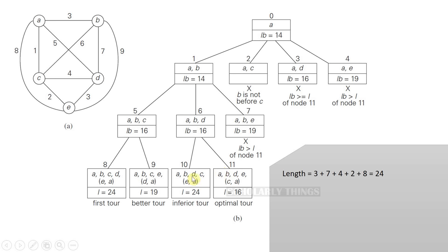Node 10 is suggesting we take the route A, B, D, C, E, and then A. That will be 3 plus 7 plus 4 plus 2 plus 8. Total length is 24.